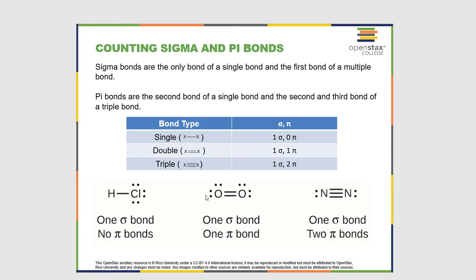As far as counting sigma and pi bonds practically: sigma bonds are the only bond of a single bond and the first bond of a multiple bond. Pi bonds are the second bond of a double bond, and the second and third bonds of a triple bond. So: a single bond is one sigma and no pi; a double bond is one sigma and one pi; a triple bond is one sigma and two pi. For HCl, one sigma and no pi. For O double bond O, one sigma and one pi. For N triple bond N, one sigma and two pi.